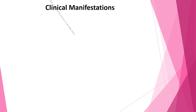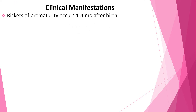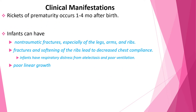Regarding clinical manifestations, rickets of prematurity occurs one to four months after birth. Infants can have non-traumatic fractures, especially of the legs, arms, and ribs. Most fractures are not suspected clinically because fractures and softening of ribs lead to decreased chest compliance. Some infants have respiratory distress from atelectasis and poor ventilation.